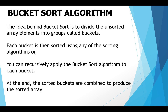How does the bucket sort algorithm work? It divides the unsorted array elements into several groups known as buckets. Each bucket is then sorted using any of the sorting algorithms — you can use bubble sort, insertion sort, quick sort, or merge sort. Or you can simply recursively apply the same bucket sort algorithm to each of the buckets. Finally, the sorted buckets are combined to produce the sorted array.